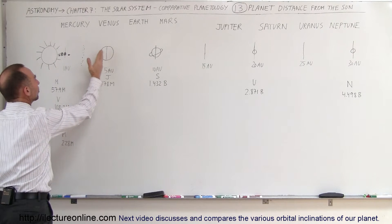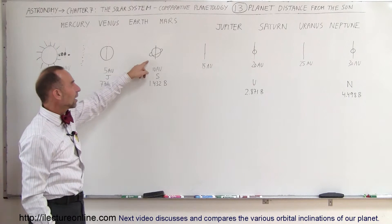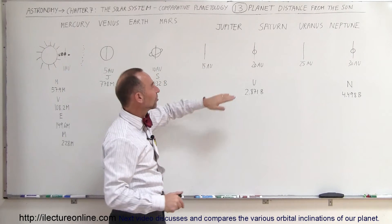Then between Mars and Jupiter, there's the asteroid belt. Here we have Jupiter at 5 astronomical units, Saturn at about 10 astronomical units, and these are approximate numbers, not exact.